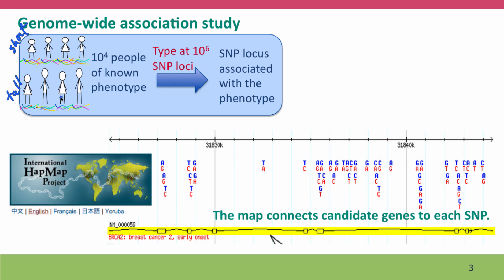One outcome of that is the prediction of genes that should be investigated to better understand the phenotype. Because HapMap has constructed the map of all SNP variation, it's possible to connect each SNP with particular genes that may explain why that SNP shows the association of particular alleles with particular extremes of the phenotype.